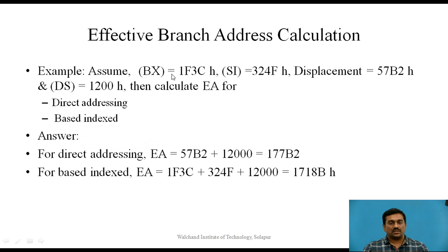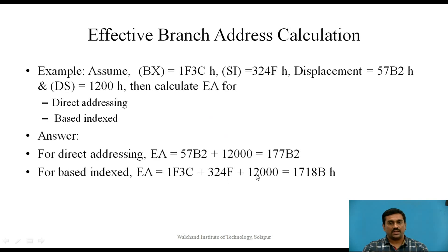In this example, assume BX contents are 1F3CH, source index register contents are 324FH, displacement is 57B2H, and DS register contents are 1200H. For direct addressing mode, EA = 57B2H + (1200H × 10H) = 177B2H. For based indexed addressing mode, EA = 1F3CH (BX) + 324FH (SI) + DS × 10H = 1718BH in hexadecimal.